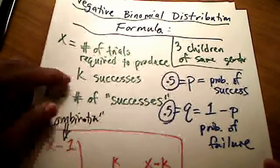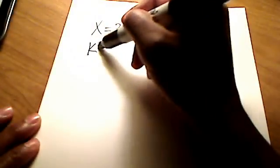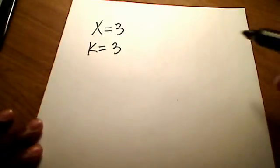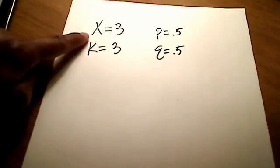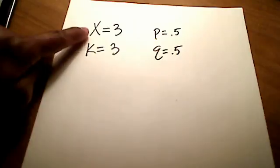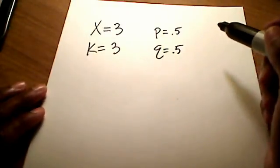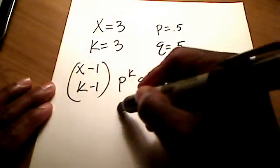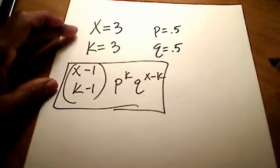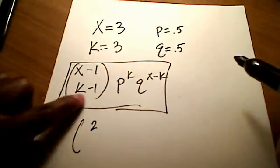Here's the question: if x, the number of trials, is 3, and k is going to be 3 because we want 3 children of the same gender, and little p is 0.5 which means little q is also 0.5 — then what's the probability that it takes exactly 3 children to have all 3 being the exact same gender? Using the formula x minus 1 over k minus 1 times p to the k times q to the x minus k, let's try this for x equal to 3.